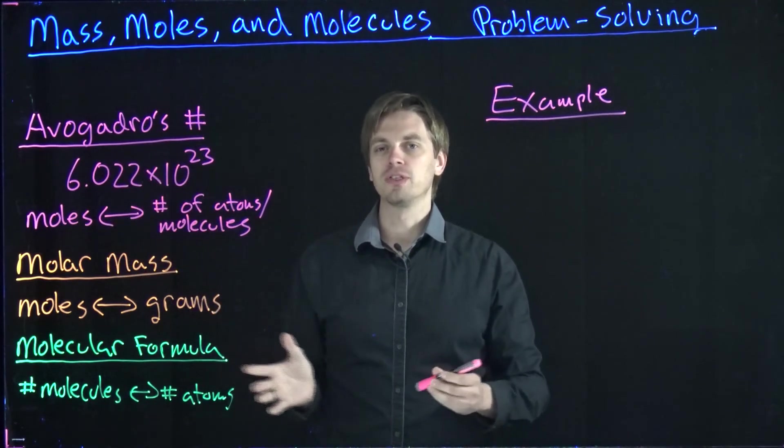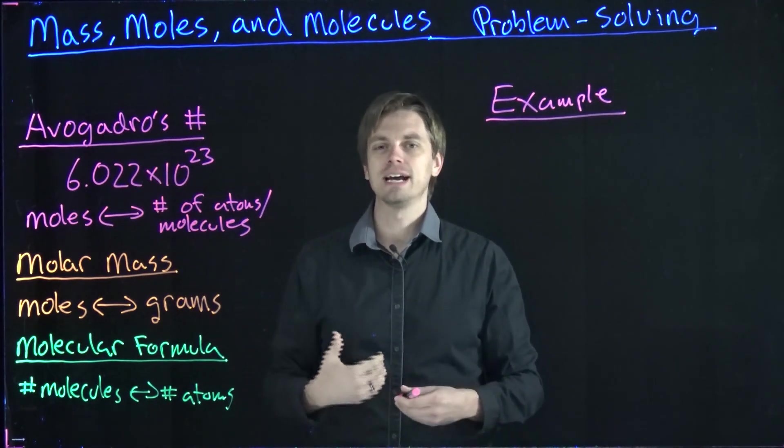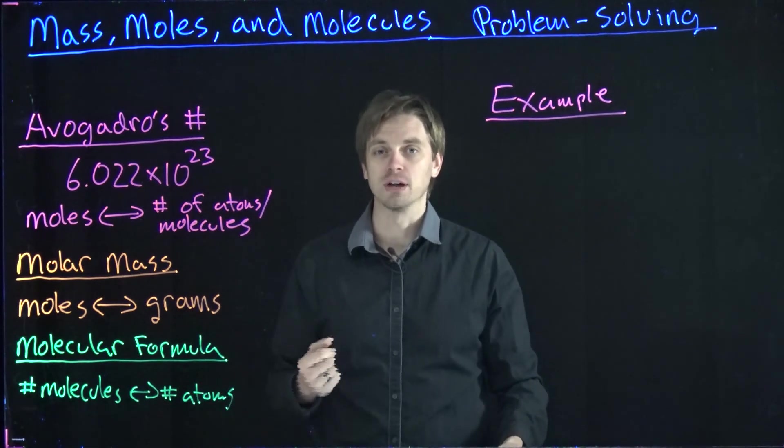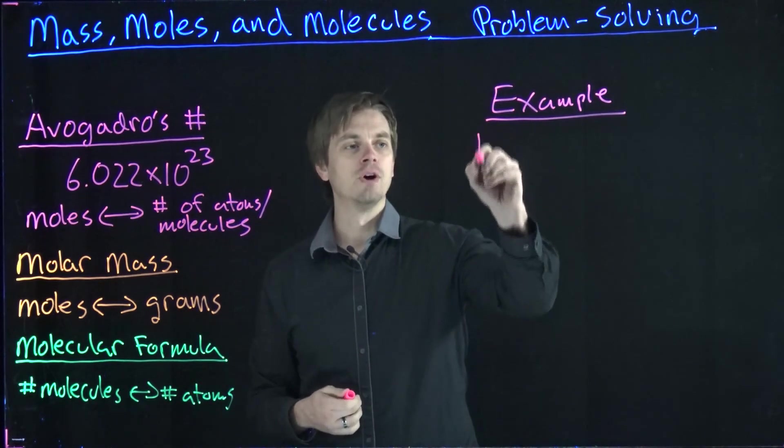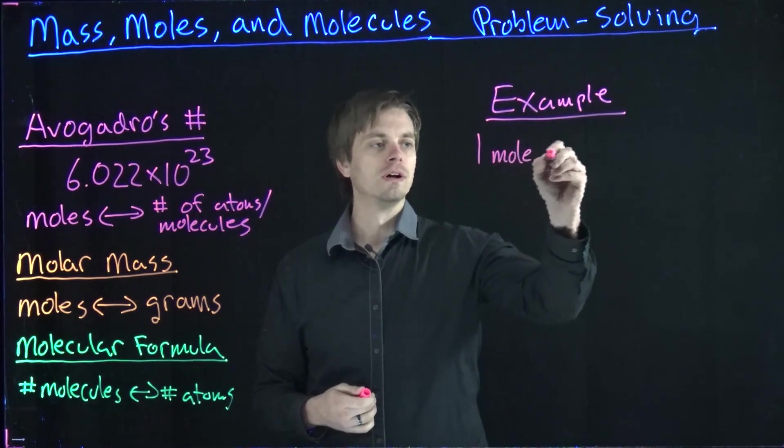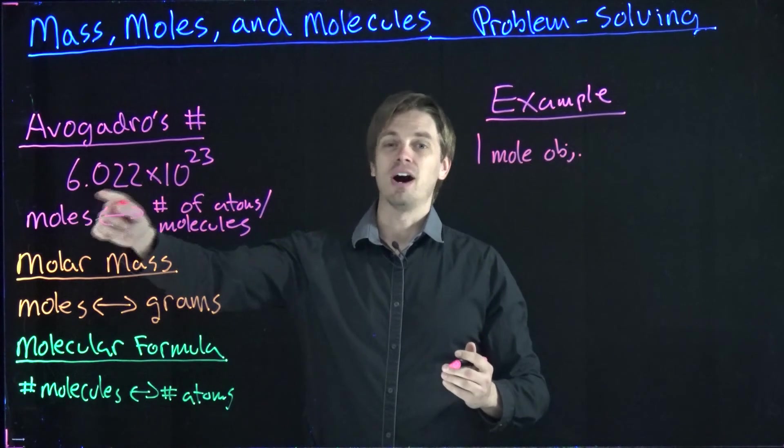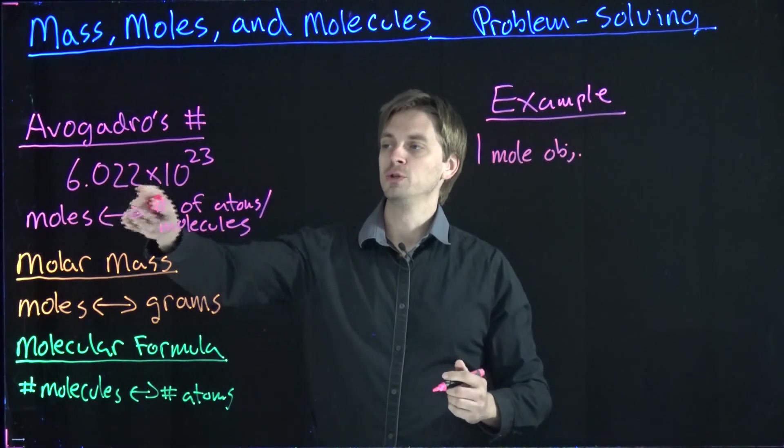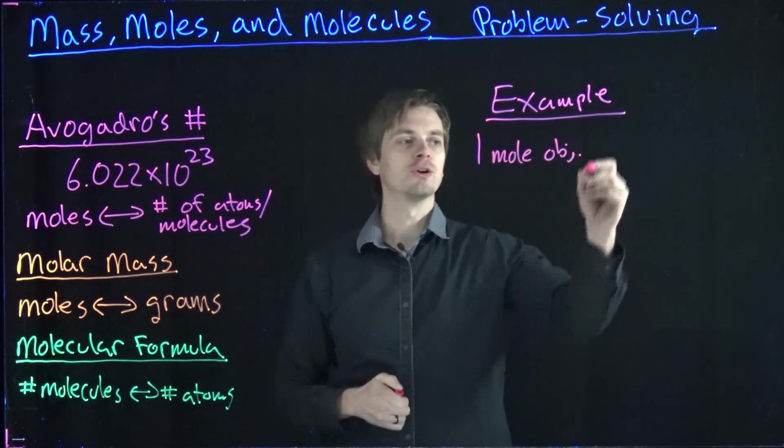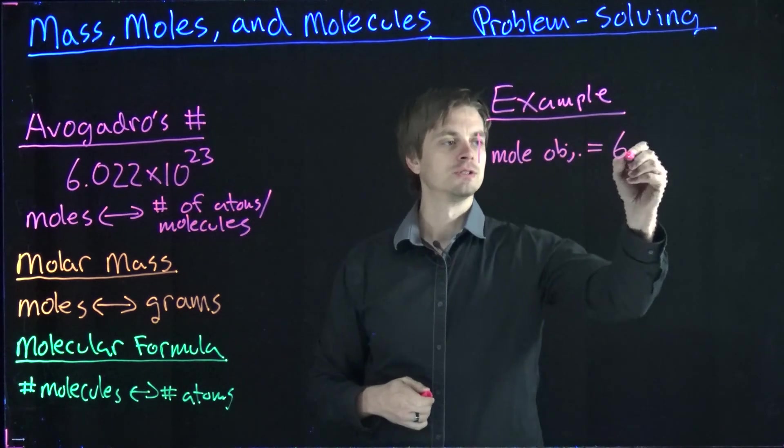If you're having trouble with this, think about a dozen. If I say I have one dozen objects, that means I have 12 of these objects. Well, if I have one mole of objects, that means I have Avogadro's number, or 6.022 times 10 to the 23rd of those objects. Same thing as a dozen, just a much larger number.